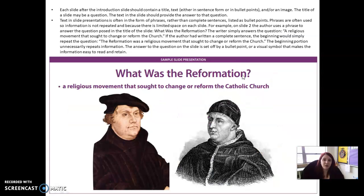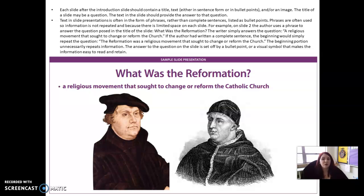Each slide after the introduction should have a title with an image. The title can be a question, such as 'What was the Reformation?' The text in the slides is often just bullet points — quick things so that when you're presenting, you can say that's exactly what you wanted to talk about. For example, a bullet point might read: 'A religious movement that sought to change or reform the Catholic Church.' You might then expand by saying there were many people who didn't believe what the Catholic Church had to say, so they spoke out with their own points of view.